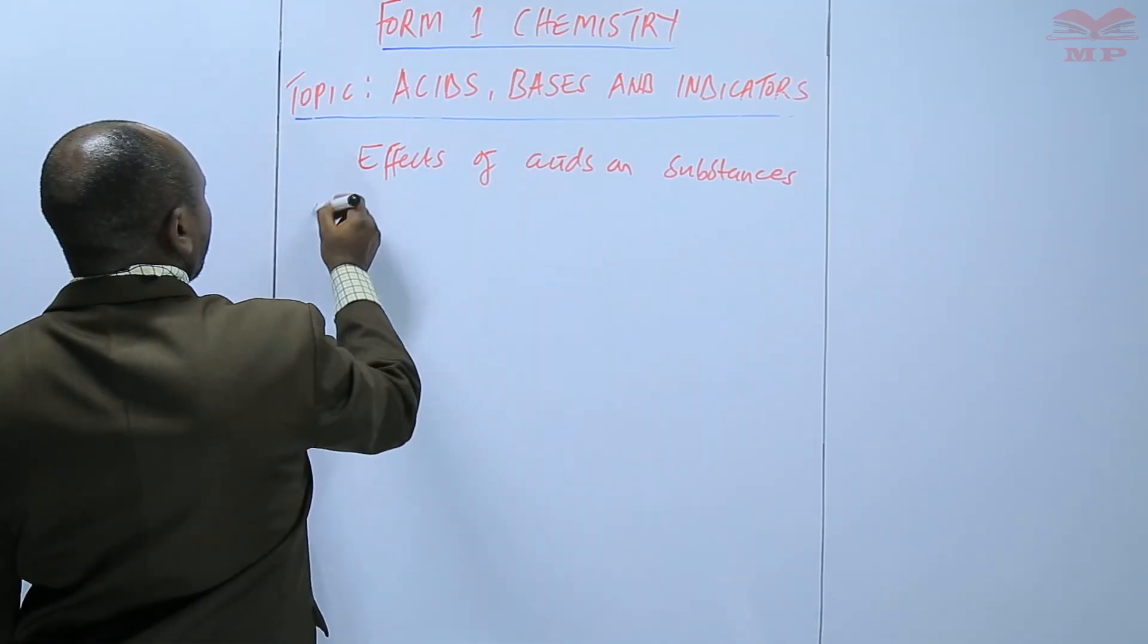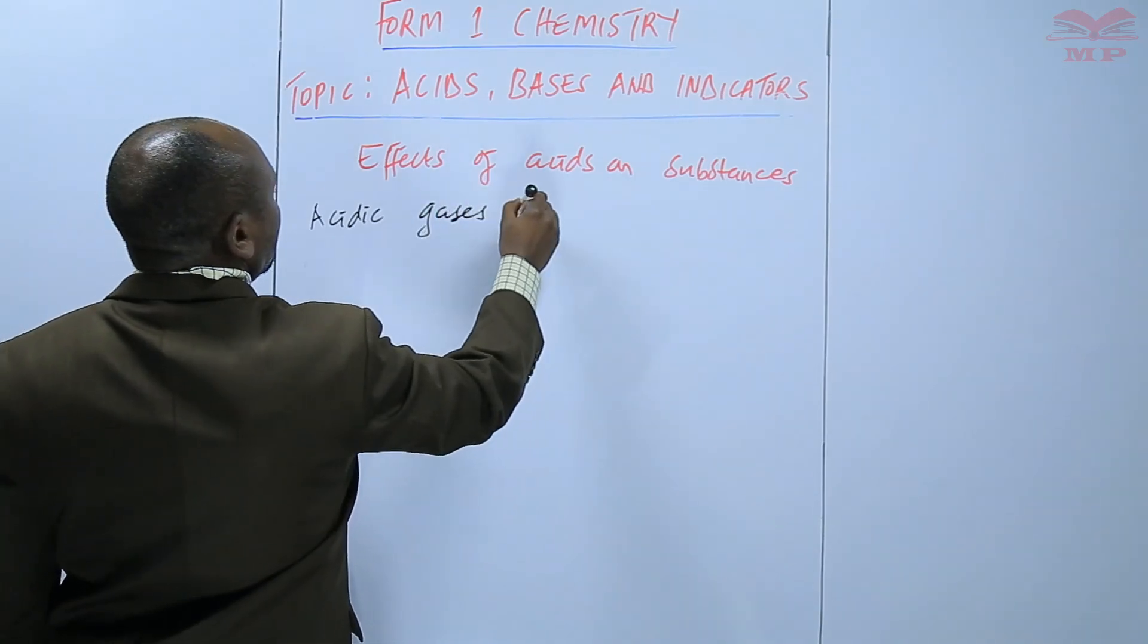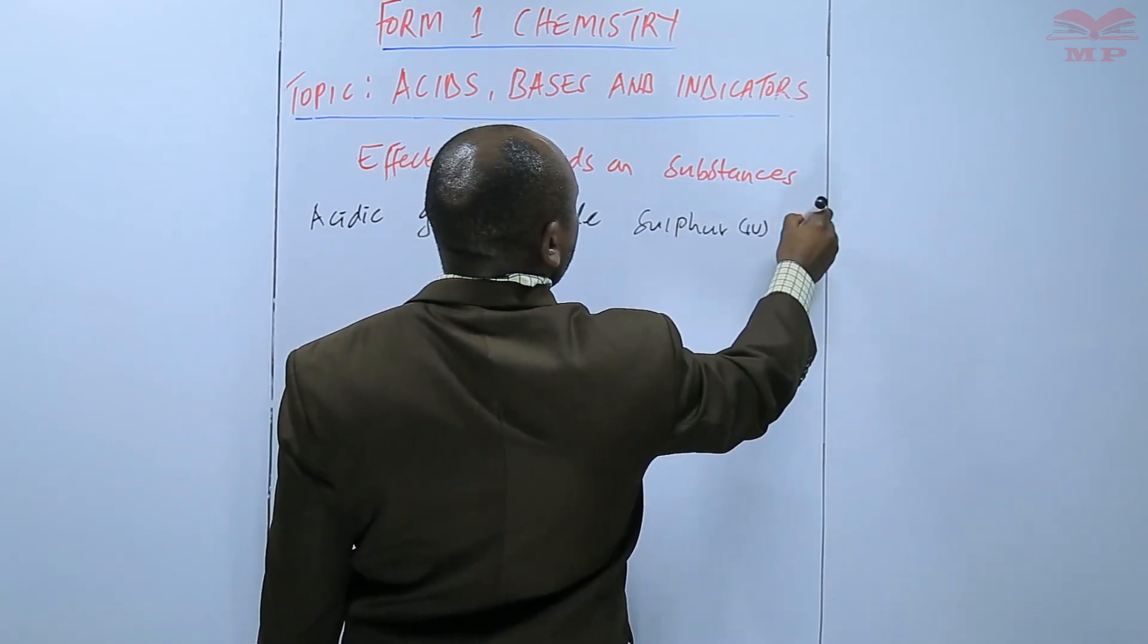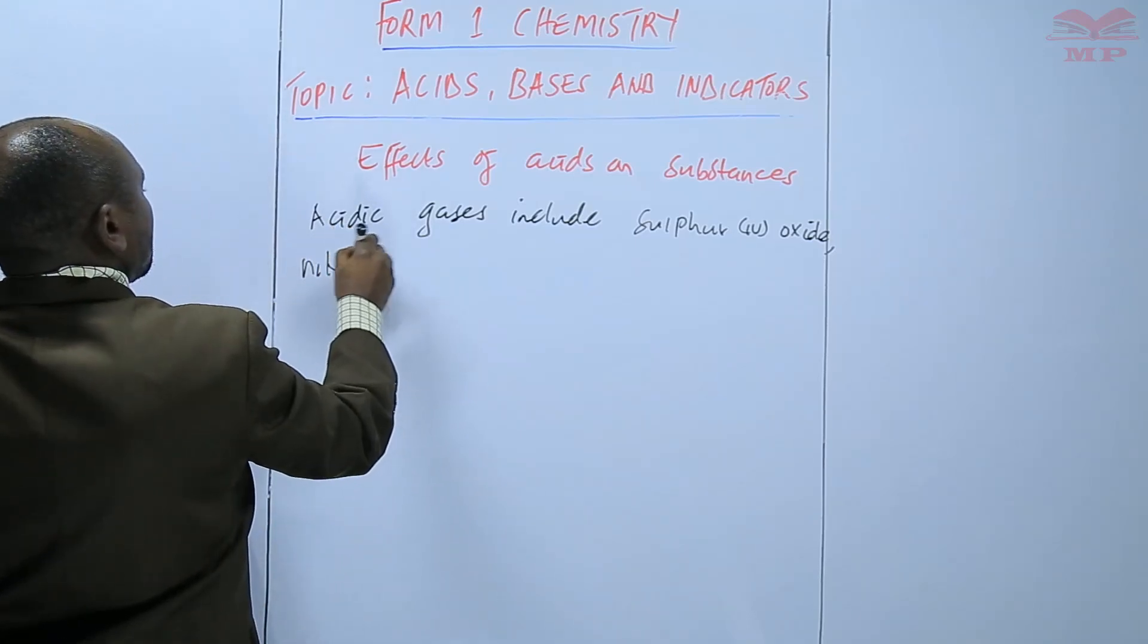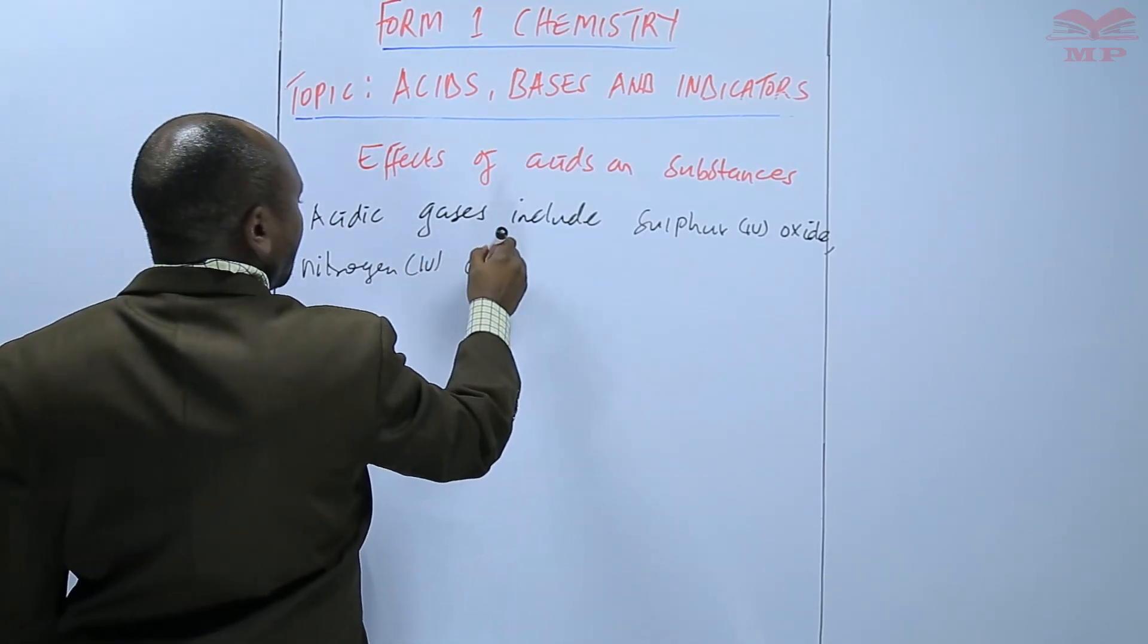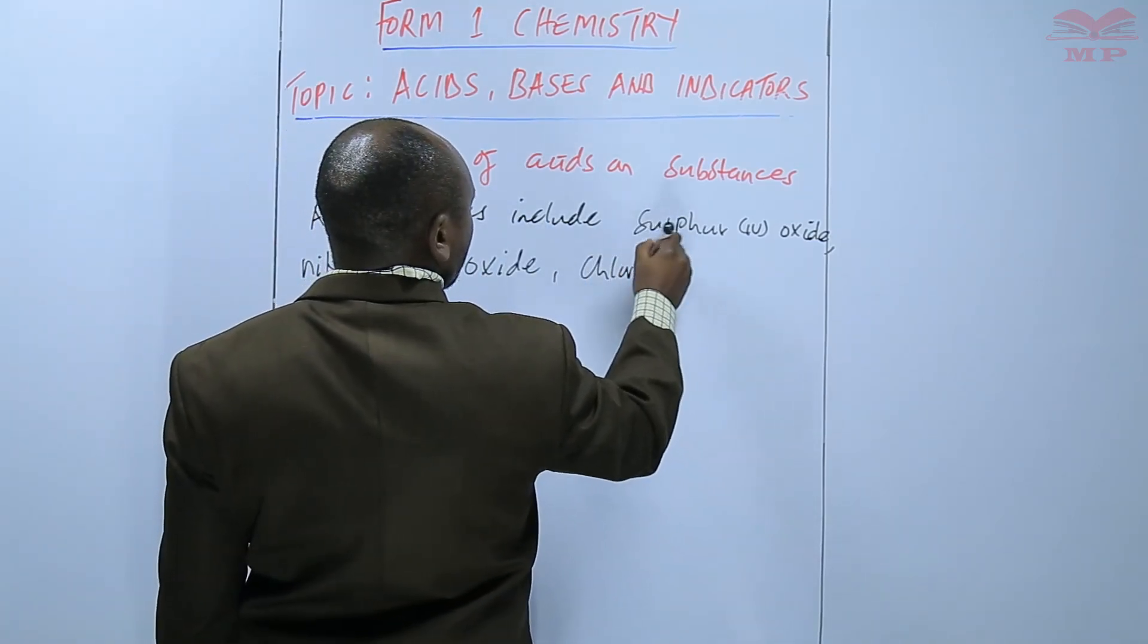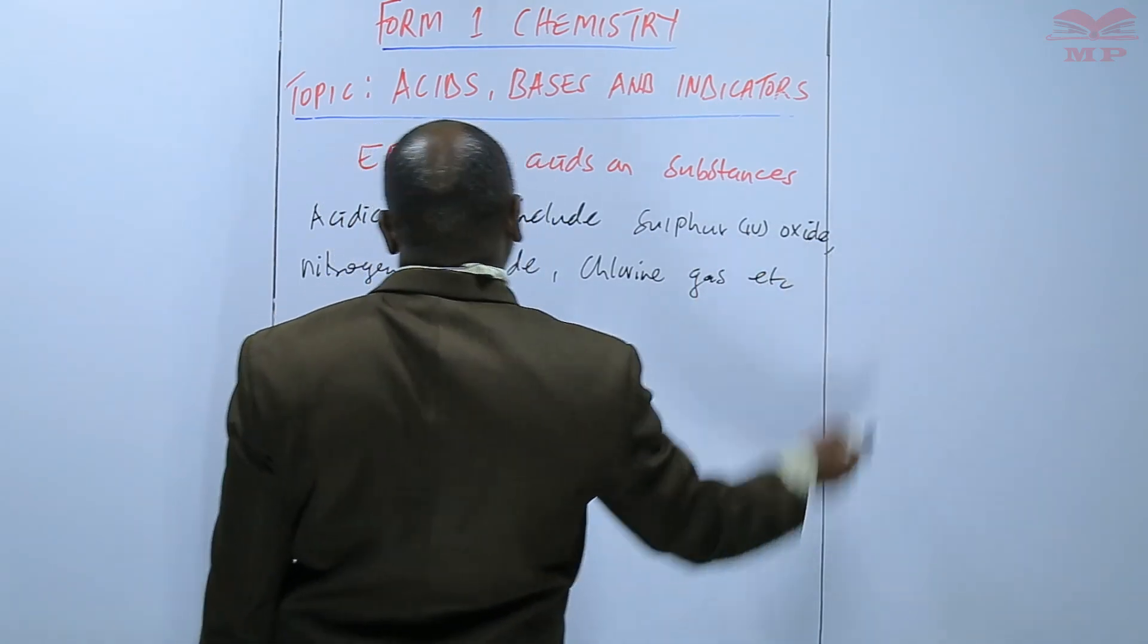We can say that acidic gases include sulfur IV oxide, nitrogen IV oxide. And these are gases that we will encounter later, even chlorine gas, etc. All those gases are acidic.